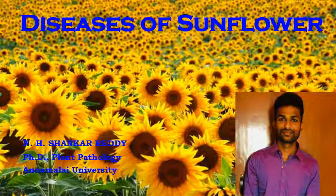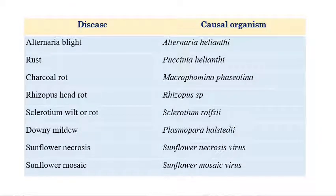Diseases of Sunflower. We will see the important diseases that can affect sunflower. The scientific name of sunflower is Helianthus annum. My name is N.H. Shankar Reddy and I am doing PhD in plant pathology at Animal University. These are the list of important diseases that can affect sunflower.